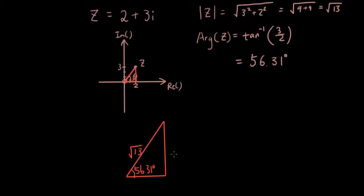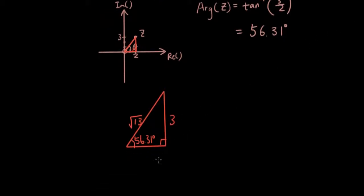And the right angle is over here. The vertical line is 3 units, and the horizontal line is 2 units.